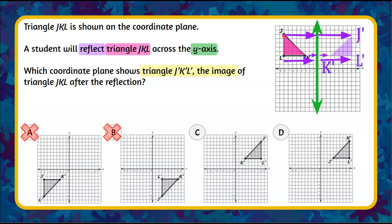When we reflected J across the y-axis, our line of reflection, J-prime ended up right here. So we can see that matches answer choice C and not answer choice D. So we can tell that the correctly reflected image is answer choice C.